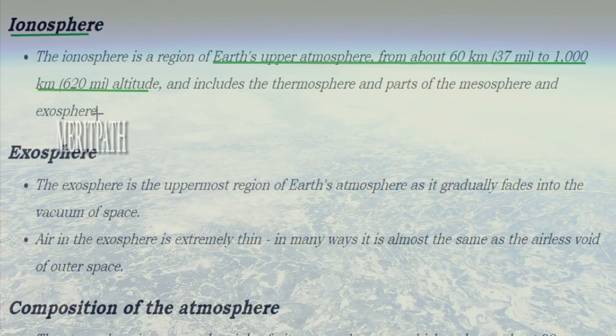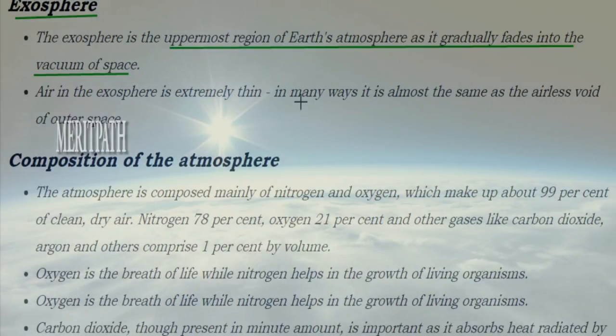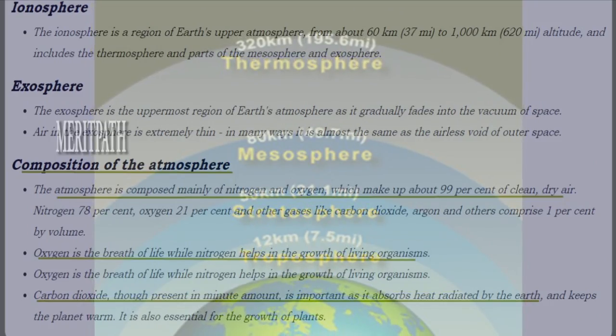The exosphere is the uppermost region of Earth's atmosphere as it gradually fades into the vacuum of space. The air here is extremely thin. In many ways, it is almost airless, like outer space.